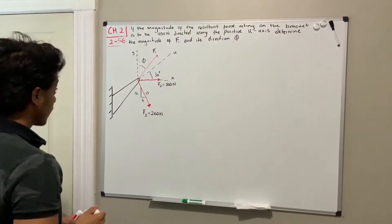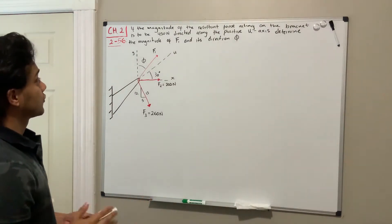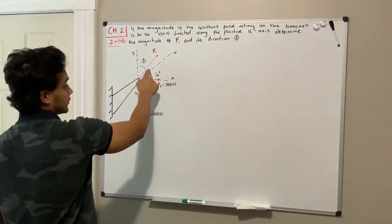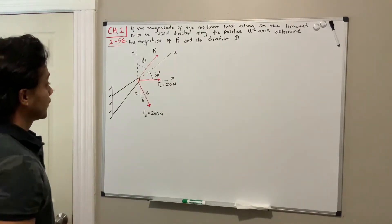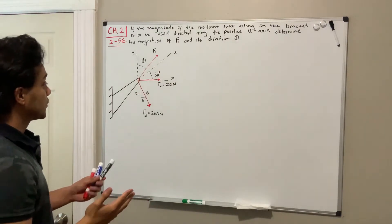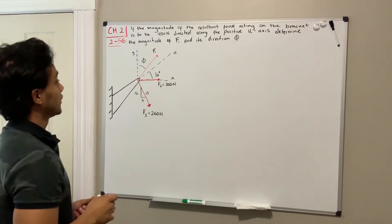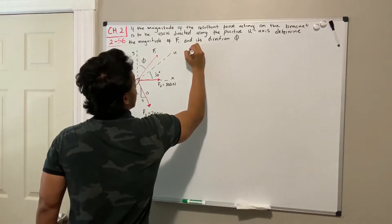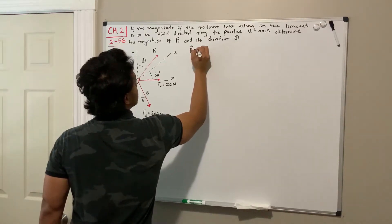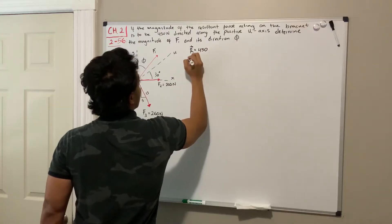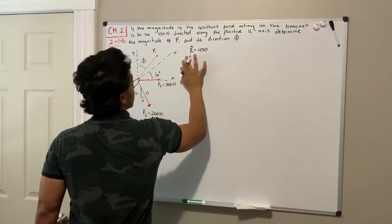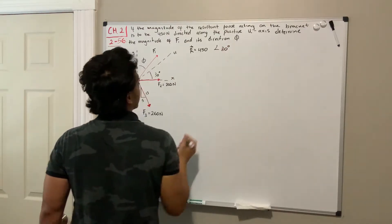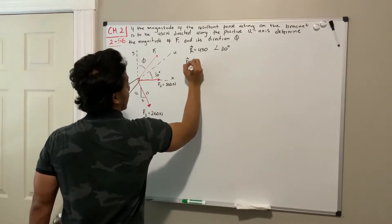They're giving us the resultant force and also the direction of the resultant force, because it's 30 degrees from the x-axis. So first of all, what I'm going to do is decompose the resultant into its Cartesian vector form. We know that R has a magnitude of 450 newtons and its angle is 30 degrees.